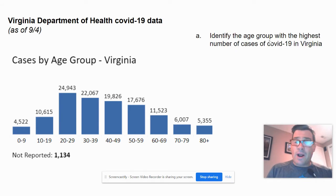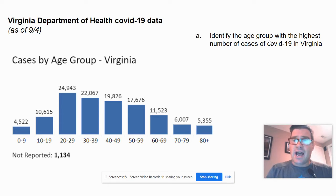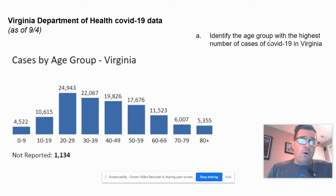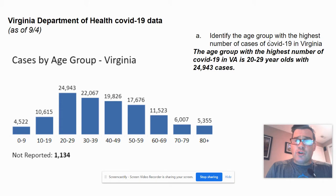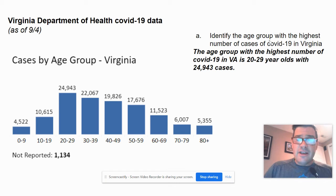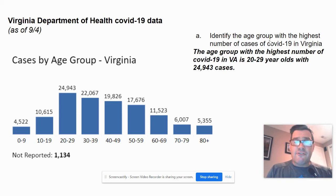When writing an essay, you'll get four questions with quantitative data. The first one says: identify the age group with the highest number of cases of COVID in Virginia. It's a really straightforward question, but you have to write in complete sentences. You look at your chart, double-check the right answer, and respond: the age group with the highest number of COVID-19 cases in Virginia is 20 to 29 year olds with 24,943 cases. Always use data from the chart — always quote your data.